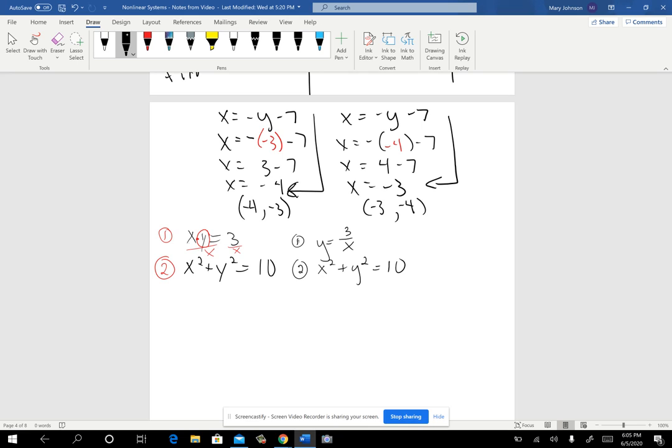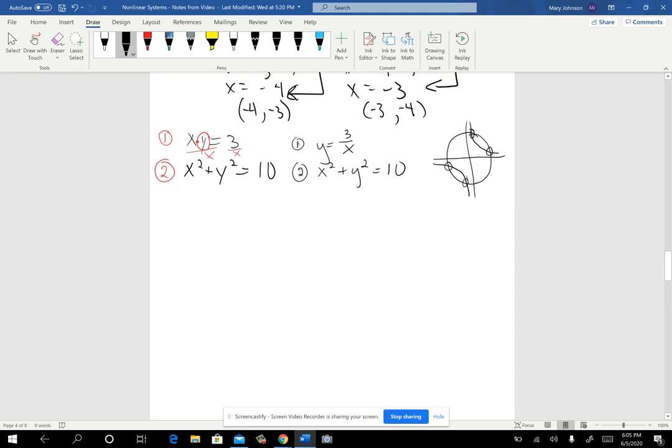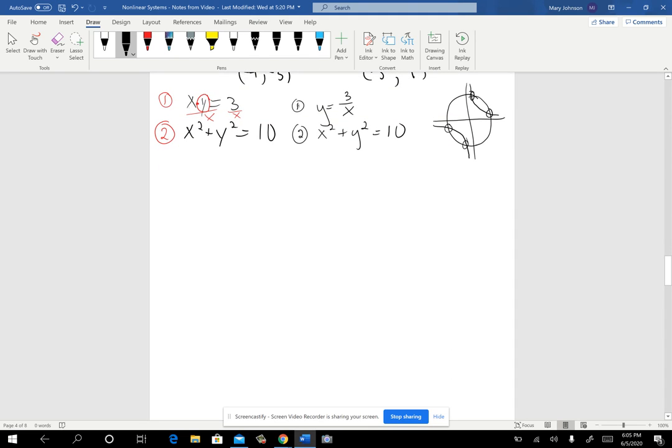All right, so just to give you a glimpse of what's going on here, y equals 3 over x will look something like this if we were to graph it. And x squared plus y squared equal 10 would do something like this. So we potentially have four points of intersection that we're going to find. Now, you aren't expected to know that ahead of time. I just thought having been looking at that might be helpful just to give you an idea of why certain things happen here.